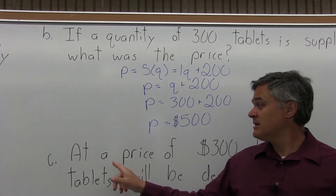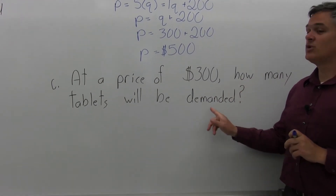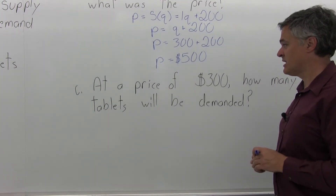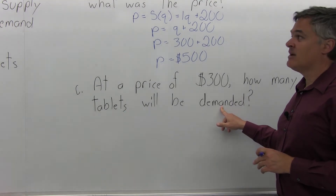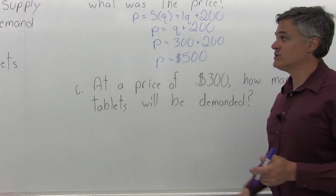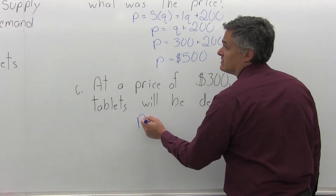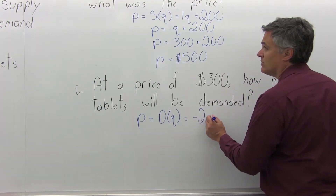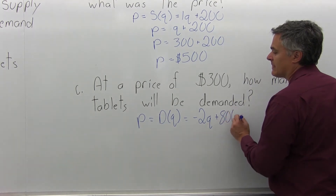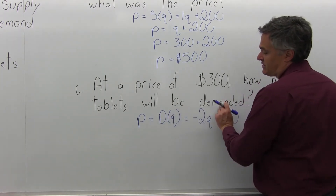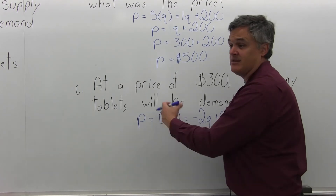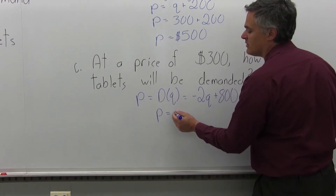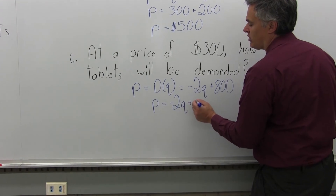Part C: at a price of $300, how many tablets will be demanded — in other words, how many will consumers be willing to buy? Because this question asks about demand, I select the demand equation, which is P equals D(Q) equals negative 2Q plus 800. The question asks about demand, so I pick the equation with the capital D. Now that I've picked the correct equation, I'll write it as P equals negative 2Q plus 800.